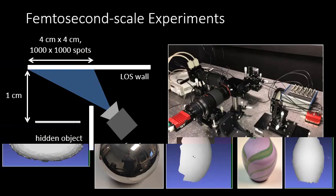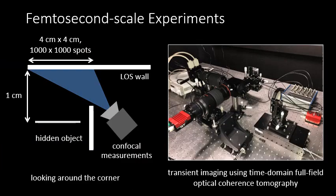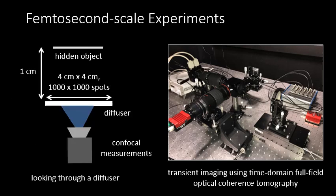The second system uses optical coherence tomography to capture transients at a resolution of a few femtoseconds. We use this system to take measurements of a US quarter coin in the looking around the corner setting.